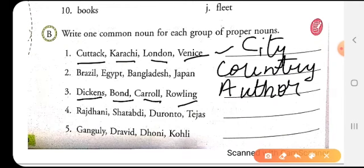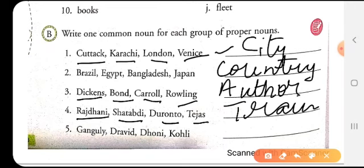Then we have the proper names Rajdhani, Shatabdi, Duronto, Tejas. So these are names of trains. We will write train over here. Then we have Ganguly, Dravid, Dhoni, Kohli. So they are the cricketers. So we will write here cricketers.